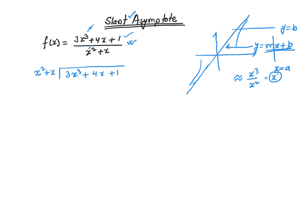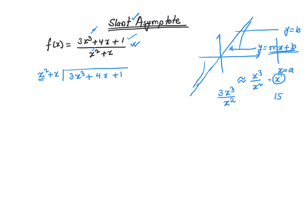How many times does x squared go into 3x cubed? In essence, I'm asking: what is 3x cubed divided by x squared? Just like asking how many times 5 goes into 15 — you divide 15 by 5 to get 3. In the same way, dividing 3x cubed by x squared gives you 3x. So x squared goes into 3x cubed, 3x times. That gives you 3x cubed, and since this is the divisor, you multiply everything by the quotient 3x, so plus 3x times x is 3x squared.